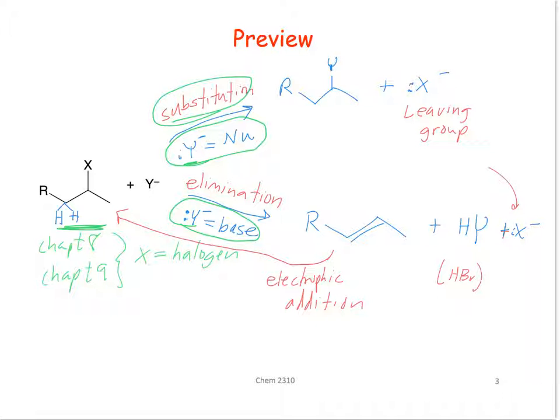And if it acts as a base, what it's going to do is remove one of these protons right here. The position where the functional group is attached is called the alpha position, and the next carbon over would be called the beta position. So this actually has two beta positions. And so in this reaction, this Y group is going to remove one of those beta protons.